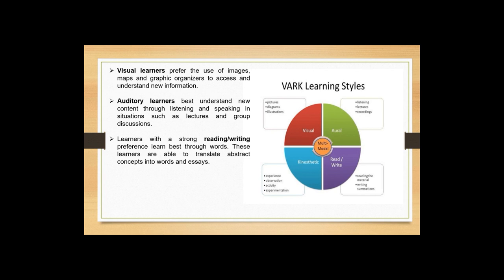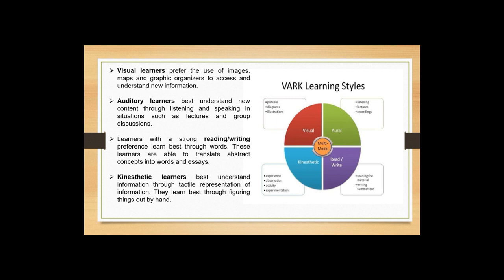Learners with a strong reading or writing preference learn best through words. These learners are able to translate abstract concepts into words and essays, and that's how they learn subjects. Lastly, kinesthetic learners best understand information through tactile representation. They learn best through figuring things out by hand — they experiment and practically approach learning. So these are the four types of learners: Visual, Auditory, Reading/Writing, and Kinesthetic, which together constitute Fleming's VARK model.